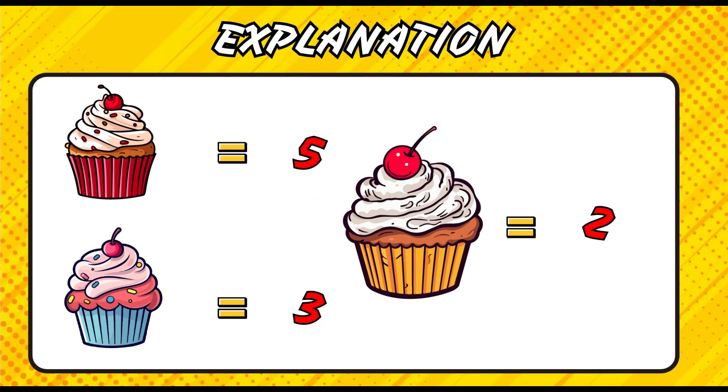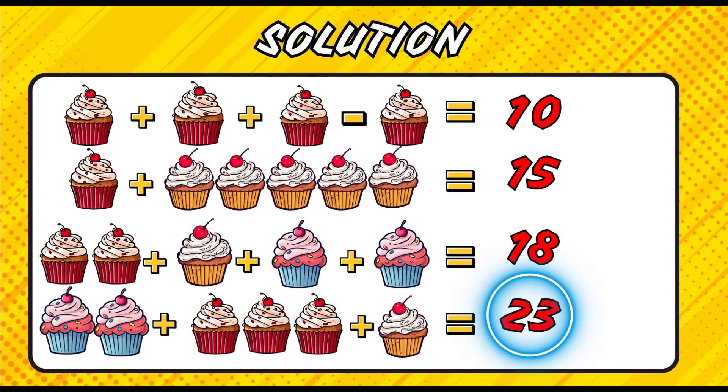Let me help you solve it. The red cupcake has a value of 5, 2 for the orange cupcake, and 3 for the blue cupcake. If you got the answer, comment down below. 23 is the correct answer.